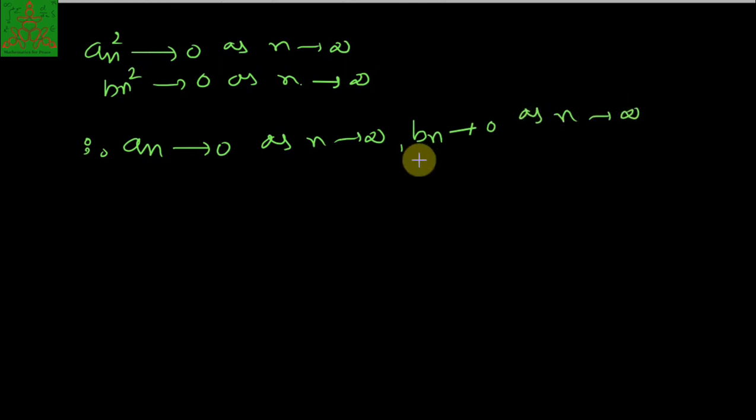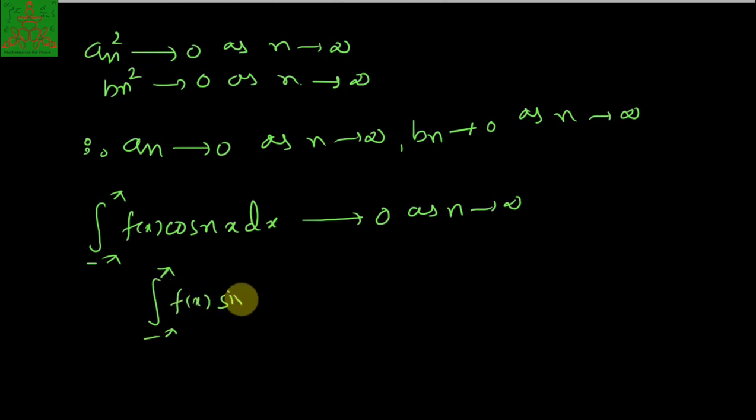What does it mean? That means the Fourier coefficients are always tending to 0 as n tends to infinity. So the integral from -π to π of f(x) cos(nx) dx is tending to 0 as n tends to infinity, and the integral from -π to π of f(x) sin(nx) dx is also tending to 0 as n tends to infinity.